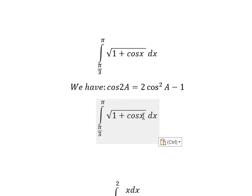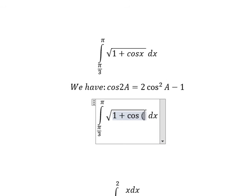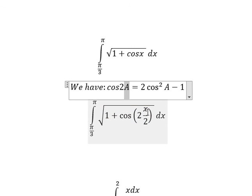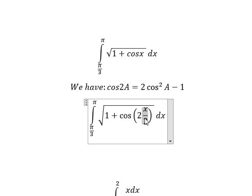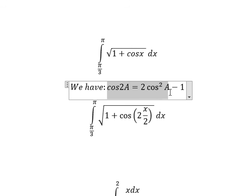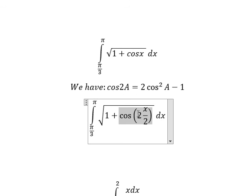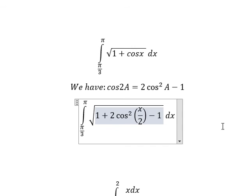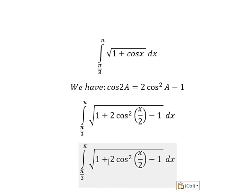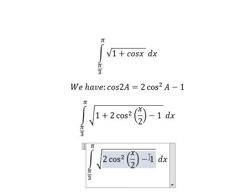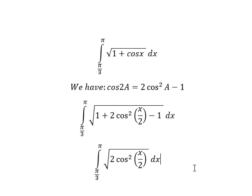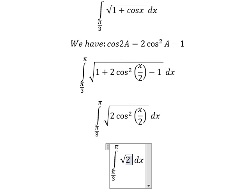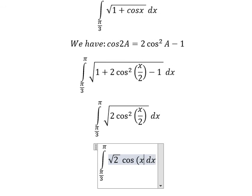So cosine x we can transform into 2 multiplied by cosine squared(x over 2). Capital A is about x over 2. Now we need to transform this expression. The terms 1 minus 1 cancel. The square root of this one gives us the square root of 2 and cosine(x over 2).